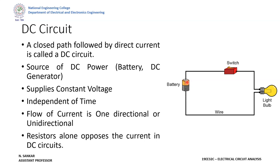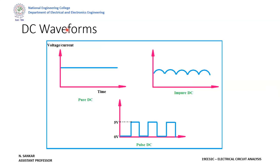In DC circuits, we mostly use a resistor to oppose the current. We have passive elements — resistors, inductors, and capacitors — but in DC circuits only the resistor plays the role of opposing current. In AC circuits, all three — resistor, inductor, and capacitor — will play the role of opposing the current. Looking at the waveforms: the first one is a pure DC waveform — throughout the time the voltage or current value is always constant, and the current value is only positive. It is a constant voltage with unidirectional current, flowing only in the positive direction.